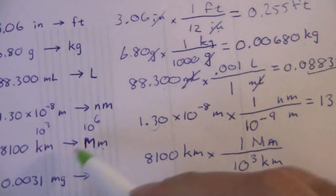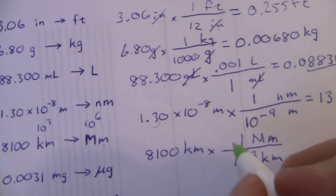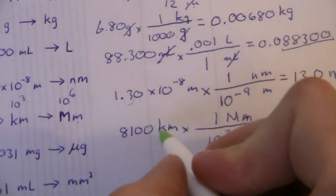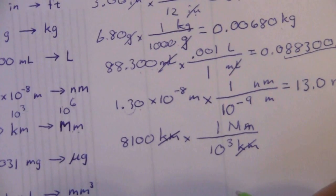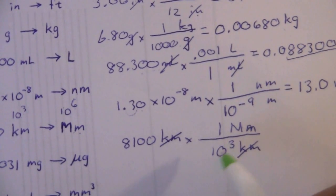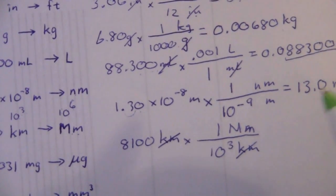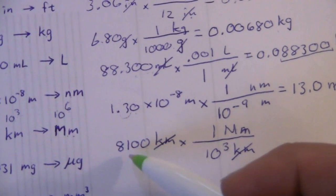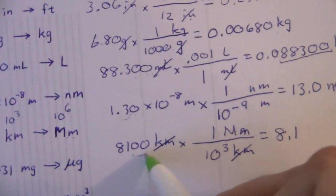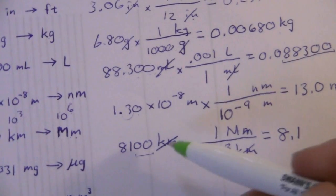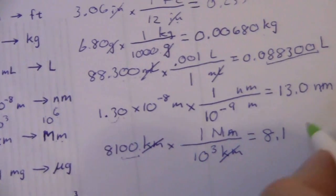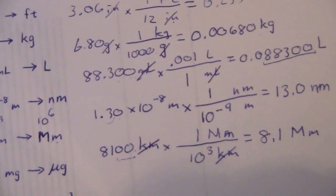Kilometers cancel, and we're dividing by 10 to the 3rd. Dividing means we subtract the exponent. With a negative 3, we're moving the decimal to the left. This gives us 8.1. What about the zeros? They're trailing zeros before the decimal place, which means they are not significant — so we don't need to show them. That's just 8.1 megameters.